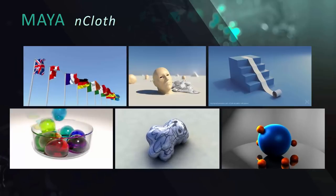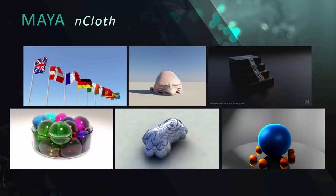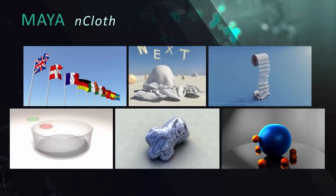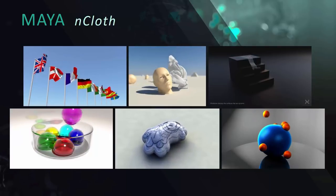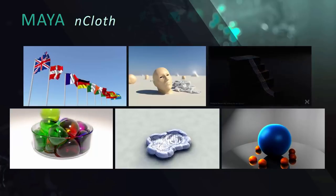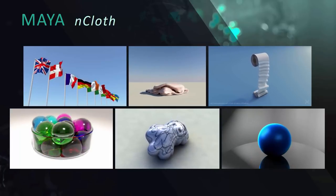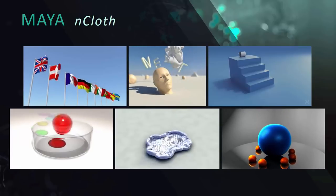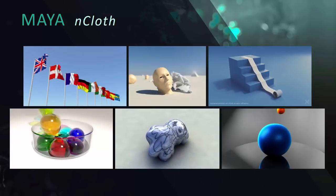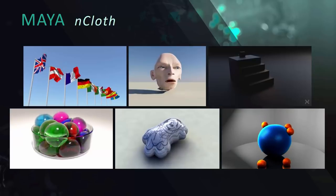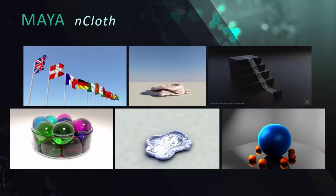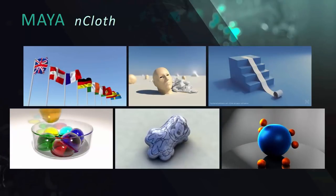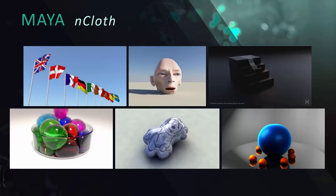When I say Nucleus, a lot of people call it nDynamic — if you hear those terms, you're talking about the same thing. The most useful is probably nCloth, which can be used for cloth — flags waving, sheets flying — but also for more soft body type effects: gooey bouncy balls, inflated balloons, squishy objects. nCloth doesn't have to be just cloth, in other words. I'm going to show you some examples of that as well.